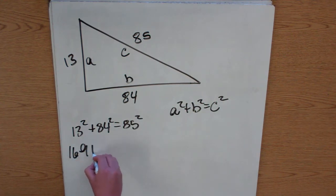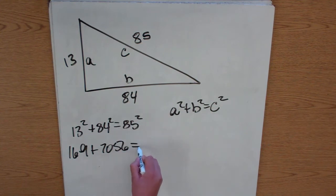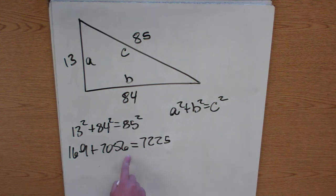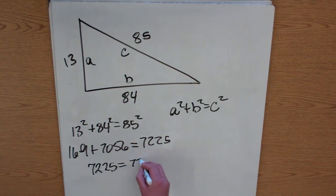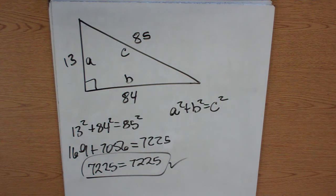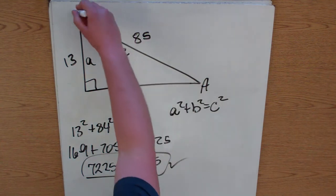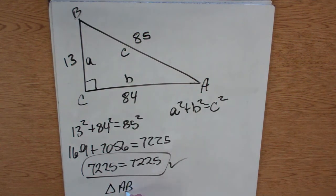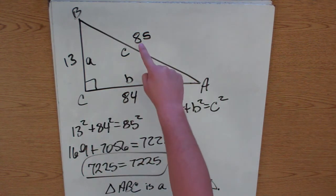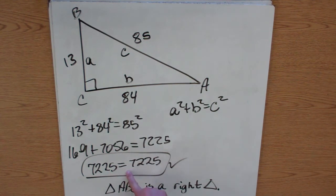13 squared is 169, plus 84 squared which is 7,056, and that needs to equal 85 squared, which is 7,225. Adding those together gives 7,225 — since that checks out, our triangle is a right triangle. Triangle ABC is a right triangle because a squared plus b squared equaled c squared. If it hadn't worked, it would not be a right triangle.